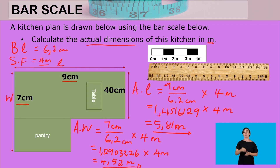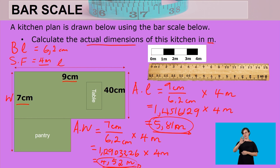So the dimensions are: actual length is 5.81 meters and actual width is 4.52 meters. Thank you so much for tuning in today. I hope you had a lovely lesson and enjoyed it — I'll see you again next time.